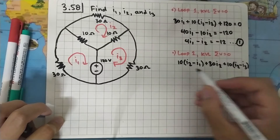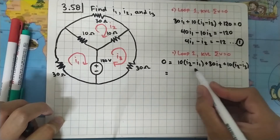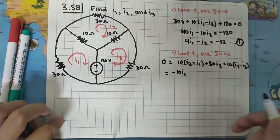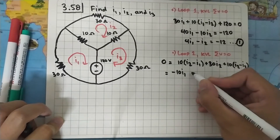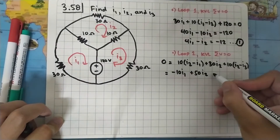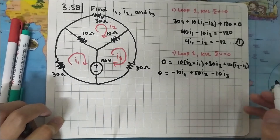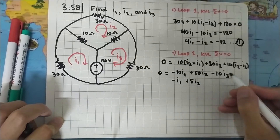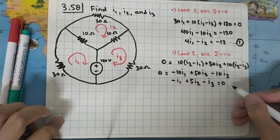For the last 10-ohm resistor in Loop 2, the focus is i2 but i3 is flowing in the opposite direction, so minus i3. Simplifying: minus 10i1 plus 50i2 minus 10i3 equals zero. Dividing by 10: minus i1 plus 5i2 minus i3 equals zero. Let's save this as equation number two.